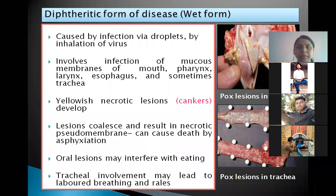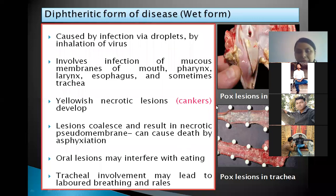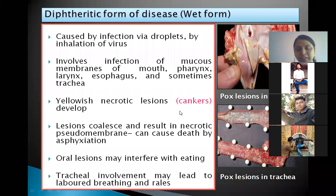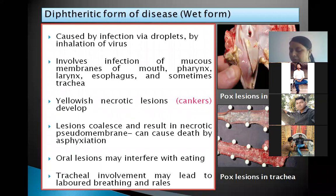The diphtheritic form, also called wet pox, is mainly caused by droplets or inhalation of the virus. It involves infection of the mucous membrane of the mouth, pharynx, larynx, esophagus, and sometimes the trachea. Yellowish necrotic lesions develop, also known as cankers. These lesions coalesce and result in the formation of a necrotic pseudomembrane on the mucous membrane, a thick false membrane that may block the trachea and cause death by asphyxiation.